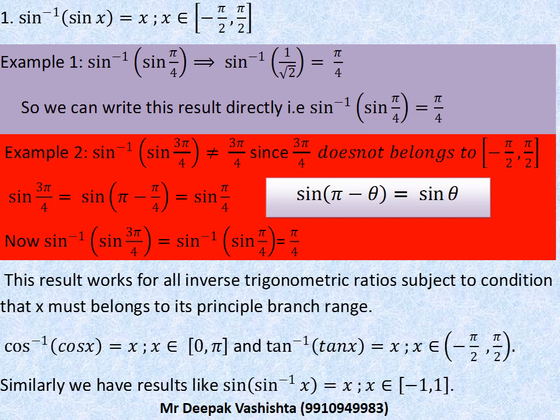Let's take example: sin inverse sin pi by 4. We know the value of sin pi by 4 is 1 by root 2. So we get sin inverse 1 by root 2. At what angle does sin equal 1 by root 2? We get the answer pi by 4. Since pi by 4 belongs to the interval minus pi by 2 to pi by 2, we can write directly: sin inverse of sin pi by 4 equals pi by 4.